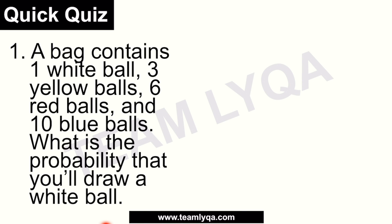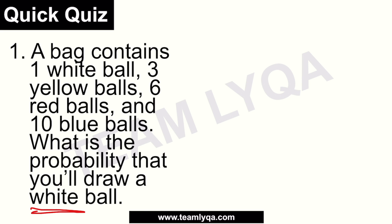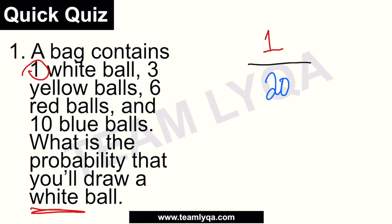Alright, let's see how you did. First question: a bag contains one white ball, three yellow balls, six red balls, and ten blue balls. What is the probability you'll draw a white ball? We want white, and there is one white ball. The total is one plus three plus six plus ten, which equals twenty. So the answer is one over twenty, or five percent.